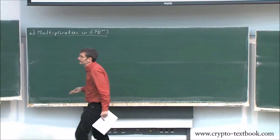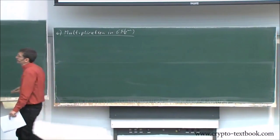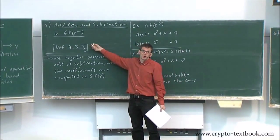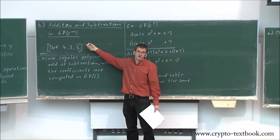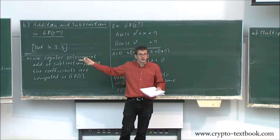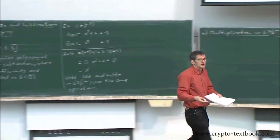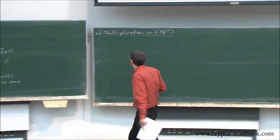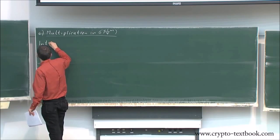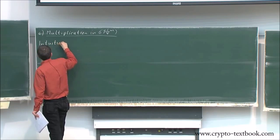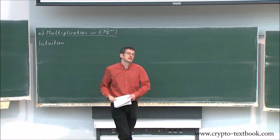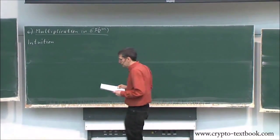What we're trying to do is essentially use the same recipes that we did here. Here we wanted to add two elements of GF(2^m). What we did was just add the polynomials. And that means of course we try to do the same thing. Our intuition tells us — our gut feeling — let's try the same thing again.